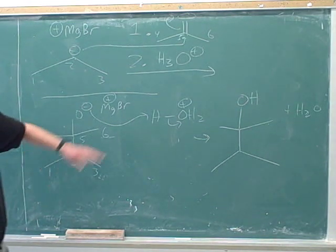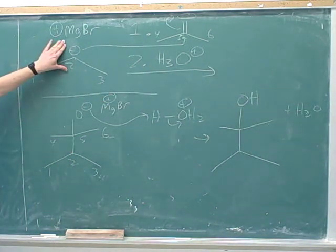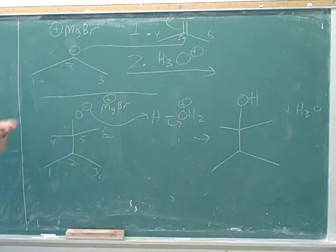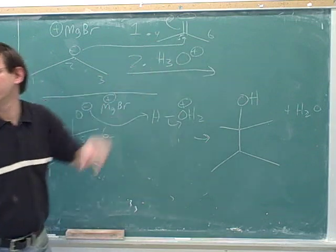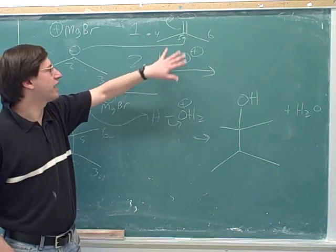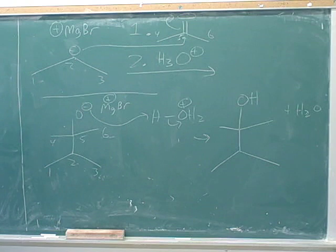What type of functional group is this? A Grignard. All right, we start with a Grignard. What is this? A ketone. Yeah, a ketone — because it's a carbonyl carbon attached to two carbon chains. So here we started with a ketone.